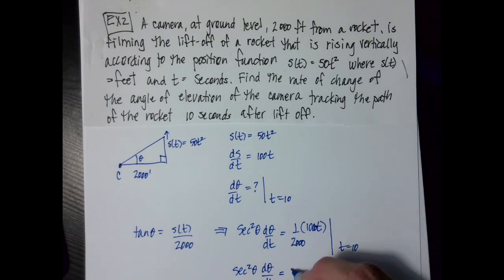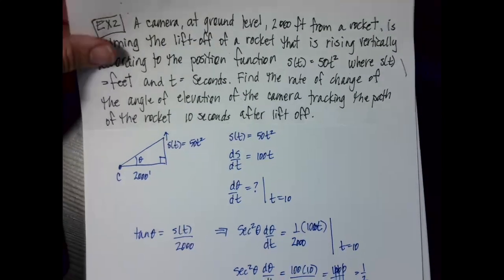When I put the 10 in, I'm going to get 100 times 10 over 2,000, which equals 1,000 divided by 2,000. Those guys cancel, so I get 1 half.